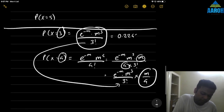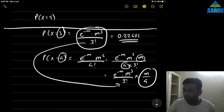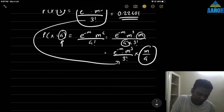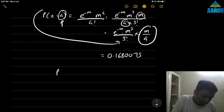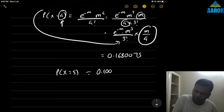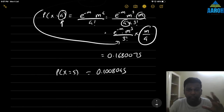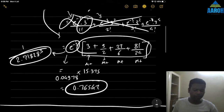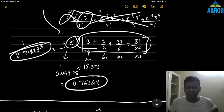Let's try it. We have P(X=3) = 0.22401. To get P(X=4), multiply by m/4 = 3/4, giving 0.1680075. To get P(X=5), multiply by m/5 = 3/5, giving 0.1008045. To get P(X=6), multiply by m/6 = 3/6. So to move to the next probability in Poisson distribution, just multiply by m/x — that's it. Not always applicable, but very useful when it is.